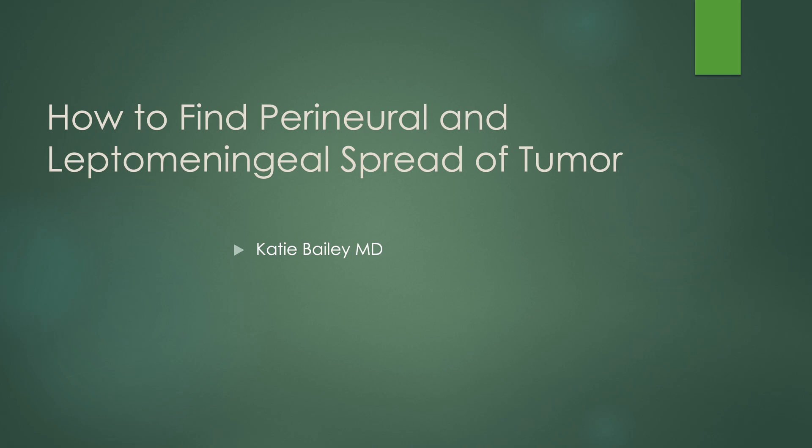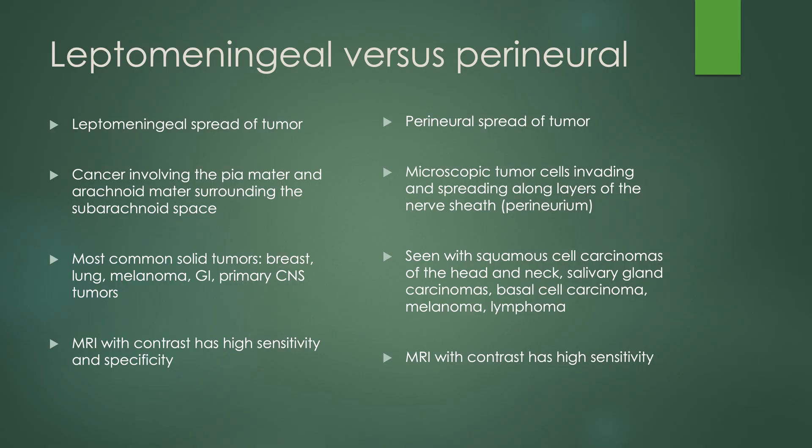Today we're going to be discussing how to find perineural and leptomeningeal spread of tumor. What's the difference between the two? Leptomeningeal spread is cancer involving the pia mater and arachnoid mater surrounding the subarachnoid space. The most common solid tumors that present with leptomeningeal spread are breast cancer, lung cancer, melanoma, GI cancers, and primary CNS tumors such as glioblastoma. MRI with contrast has high sensitivity and specificity of greater than 70%.